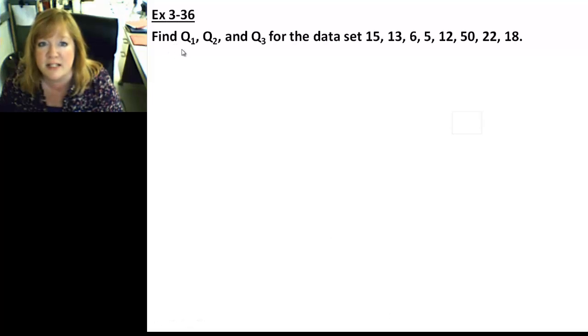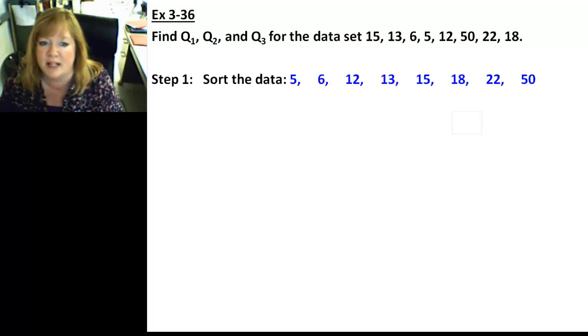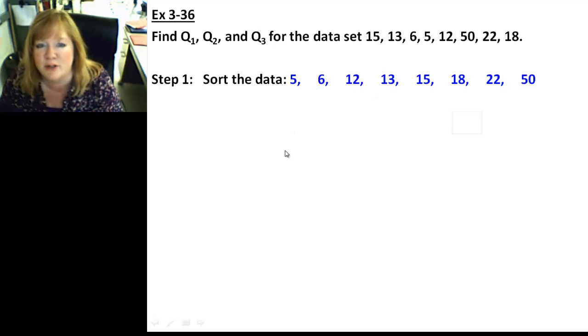Find this. This is an example of real data. So, here's the data set. And they want you to find the quartiles, Q1, Q2, Q3. Now, these are going to become important when we get to the next section and you have to do box plots. So, our first step is to sort the data. So, pretend like you did that. So, it would be 5, 6, 12, 13, 15, 18, 22, and 50. 1, 2, 3, 4, 5, 6, 7, 8. Wouldn't you know it would be an even number?